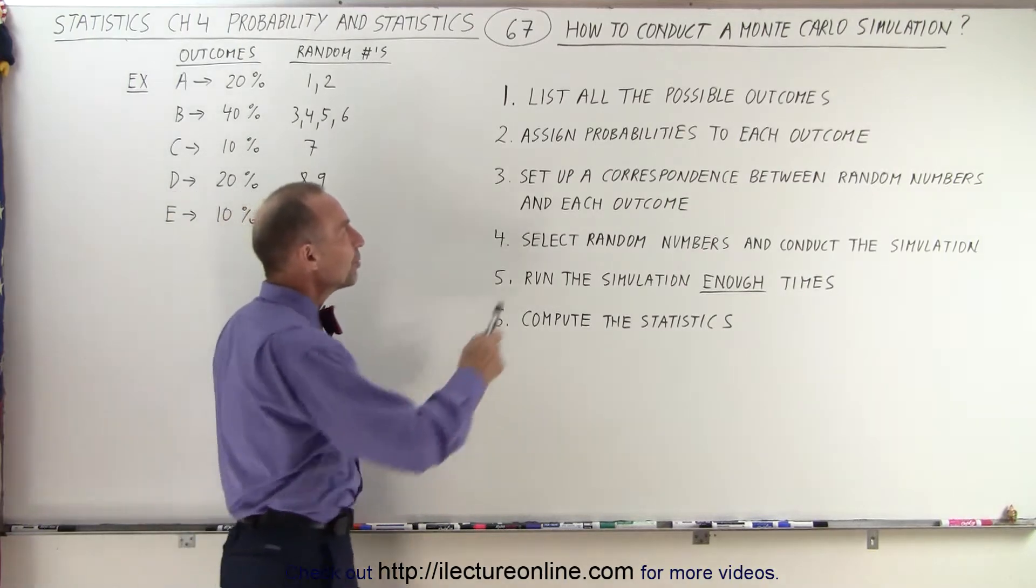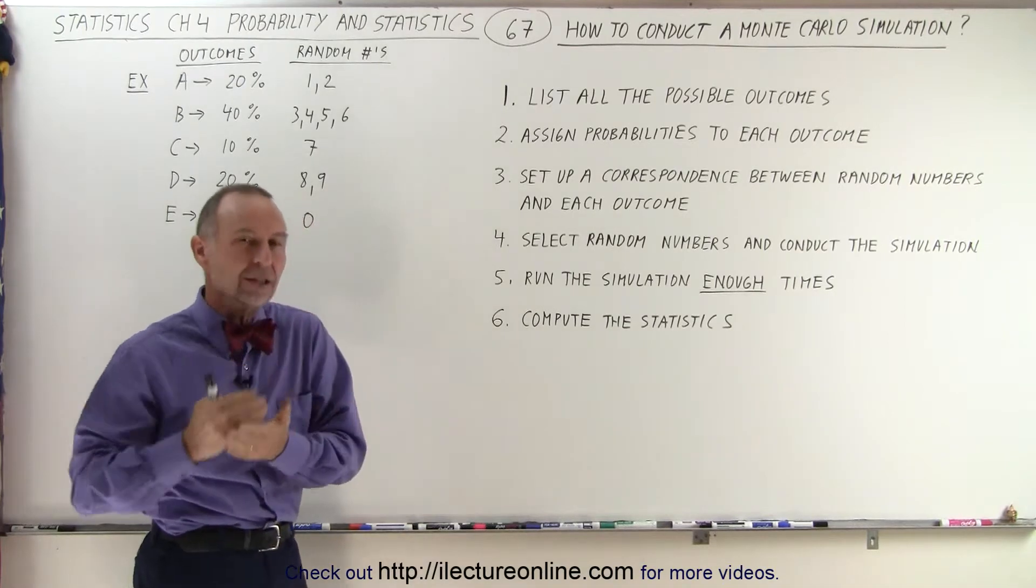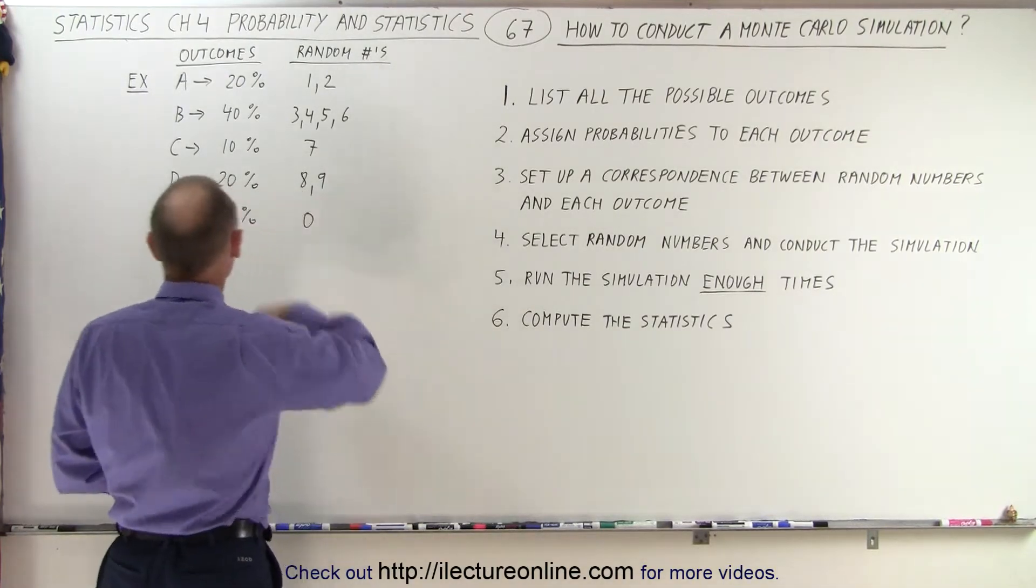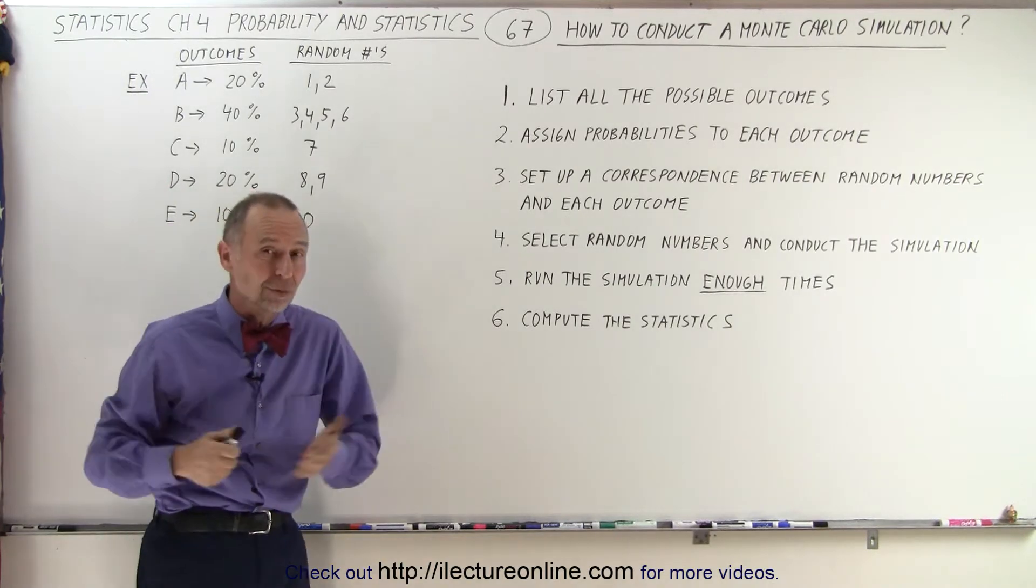So first of all, you must list all the possible outcomes. Really think about all the various outcomes that we could have, and of course we want to list them. So let's say we had five different outcomes and we'll name them A through E.